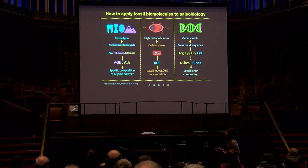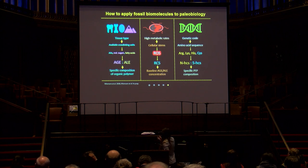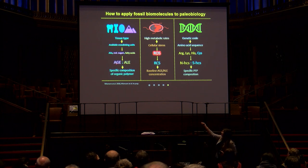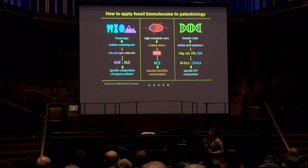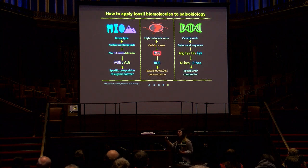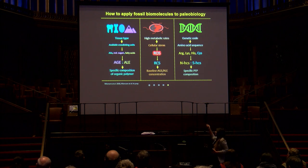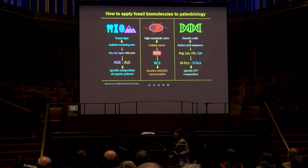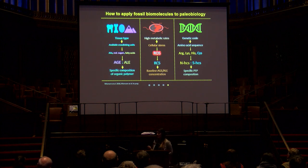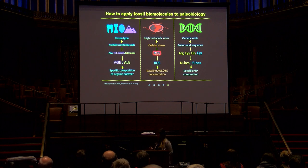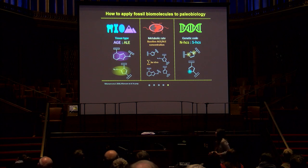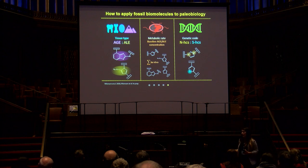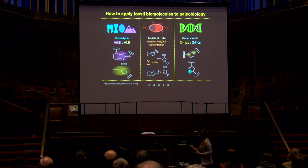I want to talk about three potential applications of protein fossilization products to paleobiology. We can use them to identify tissue types based on the AGE to ALE ratio — looking at the specific concentration and composition of advanced glycoxidation end products relative to advanced lipoxidation end products. We can characterize metabolic rates in fossil animals by analyzing the overall baseline AGE and ALE concentrations from our samples. And we can potentially draw phylogenetic inferences based on the characteristic composition and concentration of nitrogen heterocycles relative to sulfur-rich heterocycles. We're talking here about a very different concept — this has nothing to do with sequencing at all.